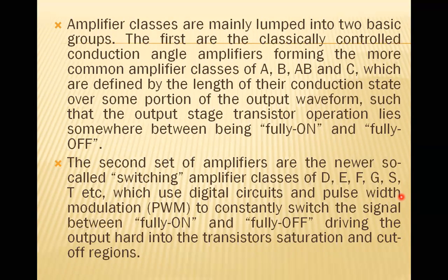Amplifier classes are mainly lumped into two basic groups. The first are the classically controlled conduction angle amplifiers — the more common classes A, B, AB, and C — which are defined by the length of their conduction state over some portion of the output waveform, such that the output stage transfer operation lies somewhere between being fully on and fully off. The conduction angle can be 360, 180, 90 degrees, or less, and that determines the class.